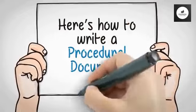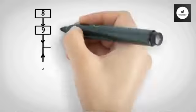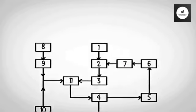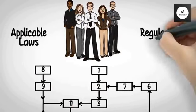Here is how to write a procedural document. The first step towards writing SOPs is to map the process end to end. Identify the logical sequence of steps and the key stakeholders, keeping in mind the applicable laws and regulations.